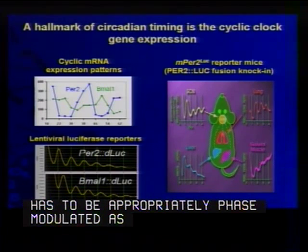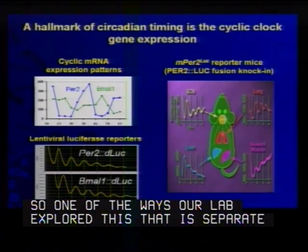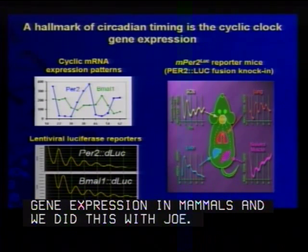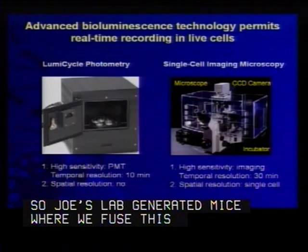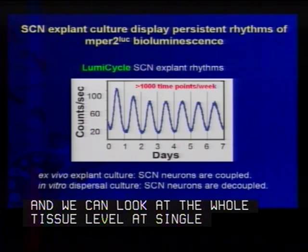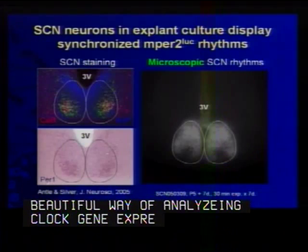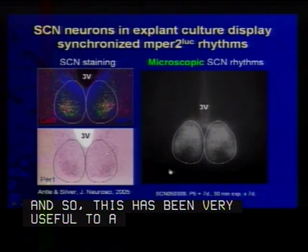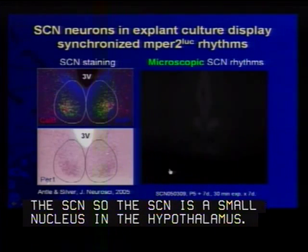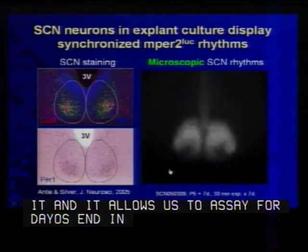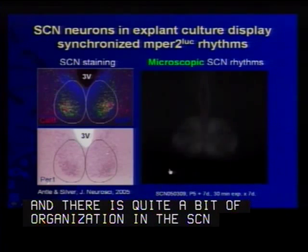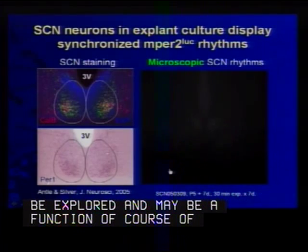One way our lab explored this is developing luciferase reporters for clock gene expression in mammals, done with Joe Takahashi. Joe's lab generated mice where we fused luciferase to the PER-2 promoter — work originally done in plants — and we can look at it at the whole tissue level or at single cell level, giving us a beautiful way of analyzing clock gene expression in real time. For example, you can make a slice of the SCN — a small nucleus in the hypothalamus — as a slice culture, and assay for days on end clock-regulated gene expression. There's quite a bit of organization in the SCN that can be explored as a function of different cell types identified with neuropeptide promoters.